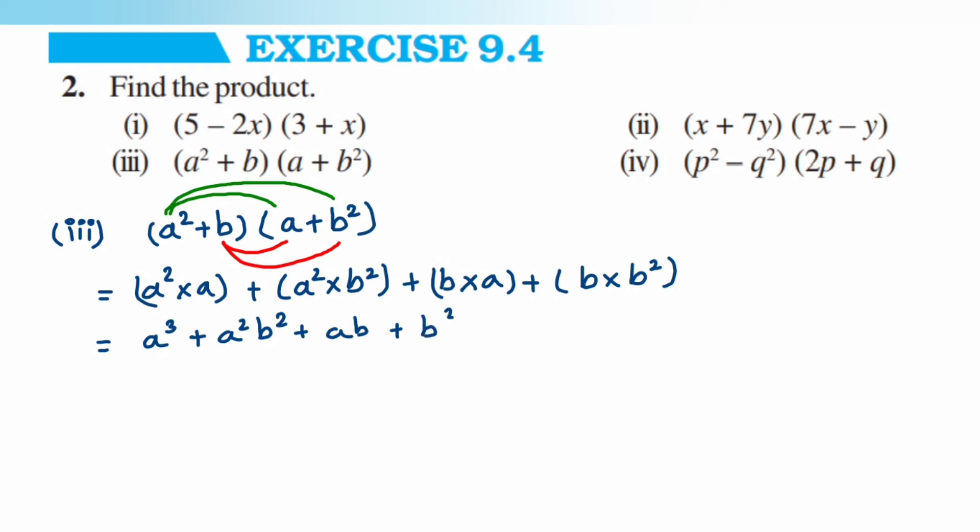There are no like terms here, so we leave the answer as is: a cubed plus a squared b squared plus ab plus b cubed. Now we'll go to the last one, which is the fourth problem.